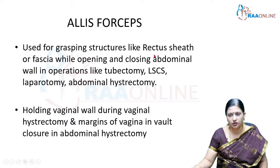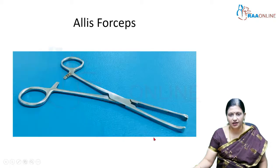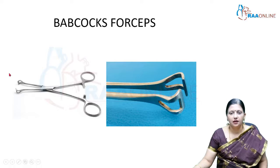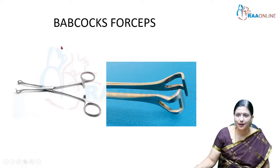Because it is traumatic, the Allis forceps cannot hold vascular structures, but it is very useful for tough fibrous structures. It is also used to hold the vaginal wall during vaginal hysterectomy and the margins of the vagina in vault closure during abdominal hysterectomy.